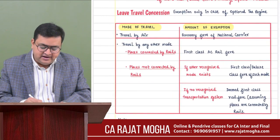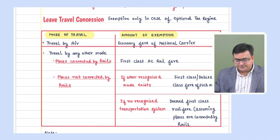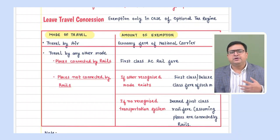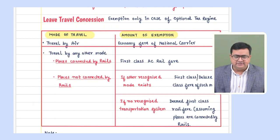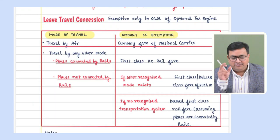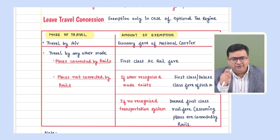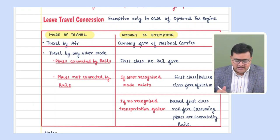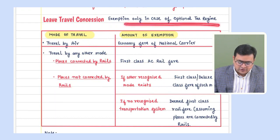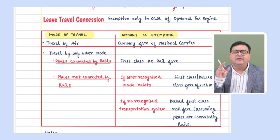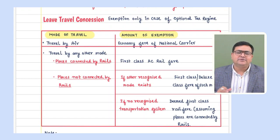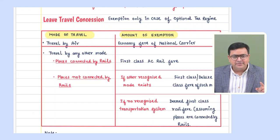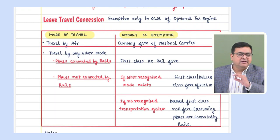The next perquisite is LTC — Leave Travel Concession. LTC is given so that the employee and their family members can visit places. Please understand that LTC can be exempt only under the optional tax regime. If the assessee is following the default tax regime, there is no exemption of LTC — the entire LTC would be fully taxable.